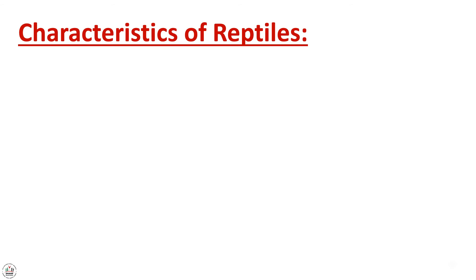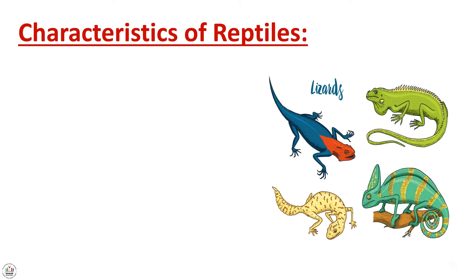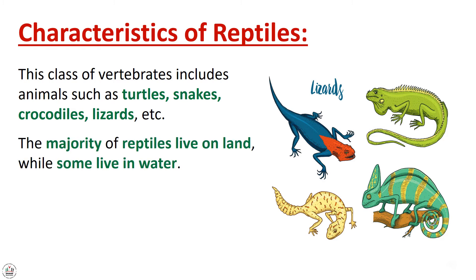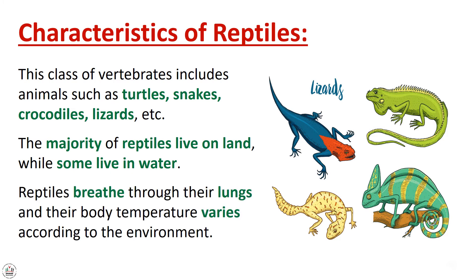Characteristics of reptiles: this class of vertebrates includes animals such as turtles, snakes, crocodiles, lizards, etc. The majority of reptiles live on land, while some live in water. Reptiles breathe through their lungs and their body temperature varies according to the environment.